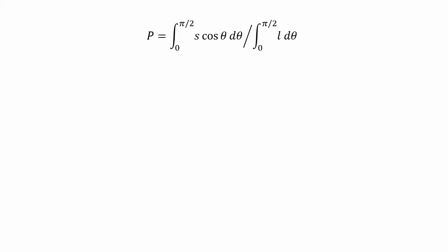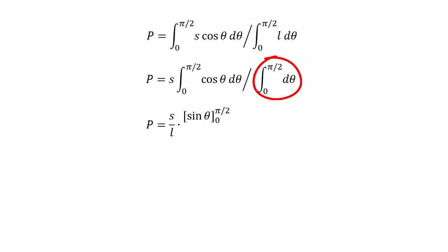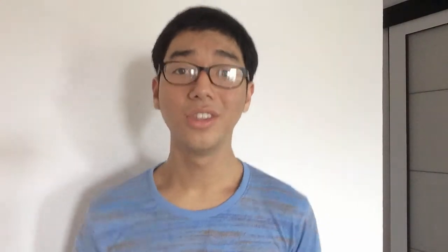The probability equals the integral of s·cos(theta) over the integral of L, both integrated from 0 to pi over 2. Since L and S are constants, we take them out. The integral of cos(theta) is sin(theta), and the integral of 1 is theta. Plugging in the bounds gives us the final answer: the probability of the stick landing on the line equals 2s over pi·L.